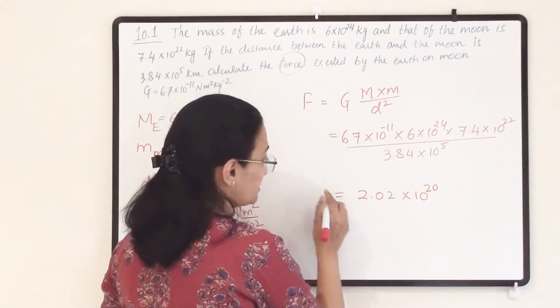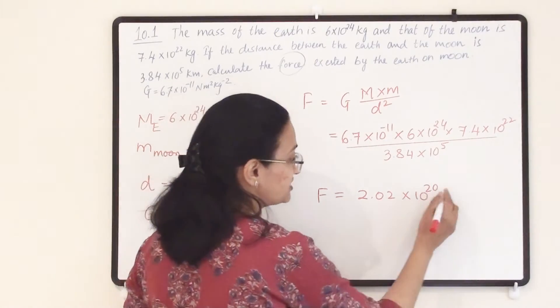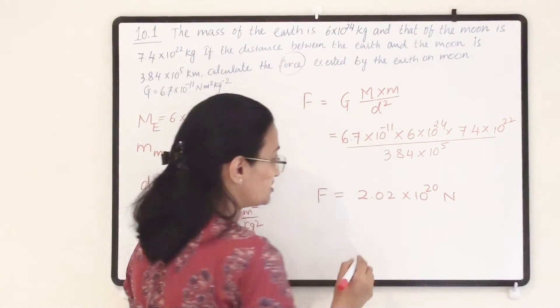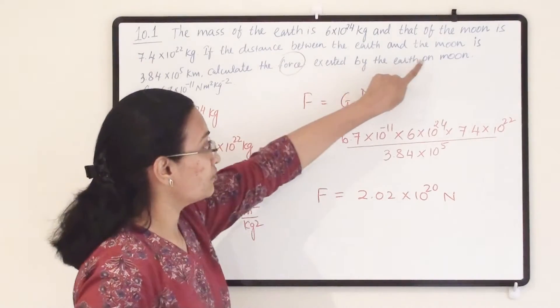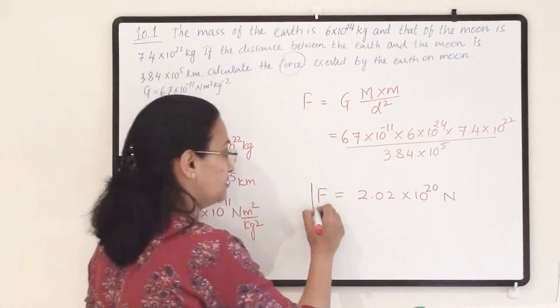This answer represents the force, so the unit is newtons. This is the force applied by the Earth on the moon. Our final answer is 2.02×10²⁰ N.